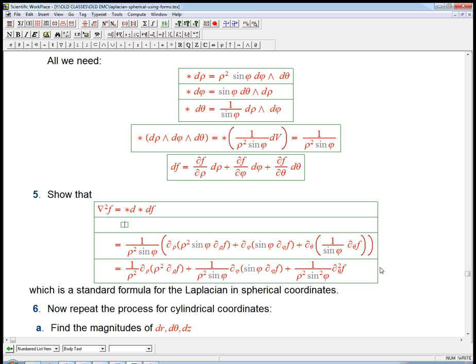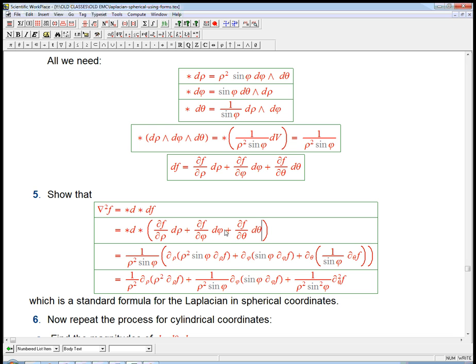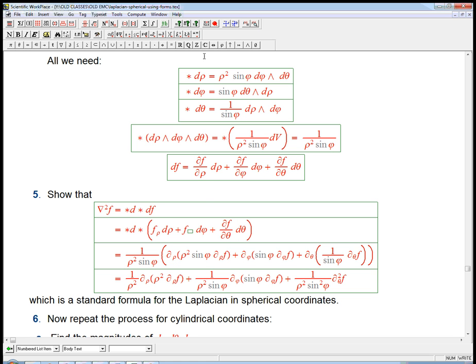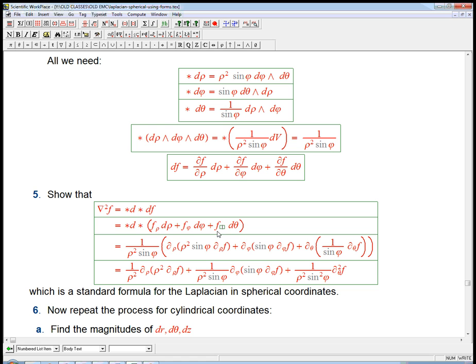Let me work it out. This is star D star of this stuff. Let's make the notation a little tighter. Let's call that F sub rho. And then this is just going to be F sub phi. And then this will be F sub theta. First step, easy.